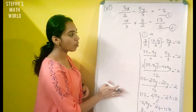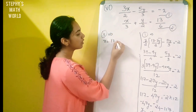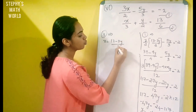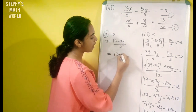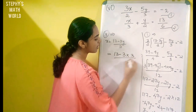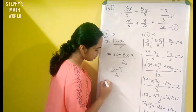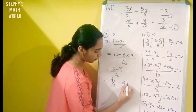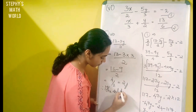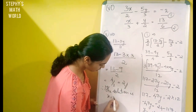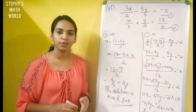So substituting y equals 3: x is equal to 13 minus 3y by 2, which gives x equal to 13 minus 3 into 3 divided by 2, equal to 13 minus 9 divided by 2, equal to 4 by 2, which equals 2. Therefore the solution is x is equal to 2 and y is equal to 3.